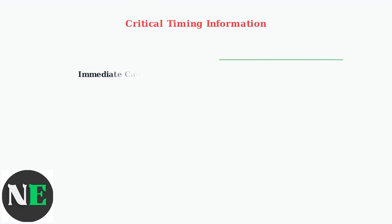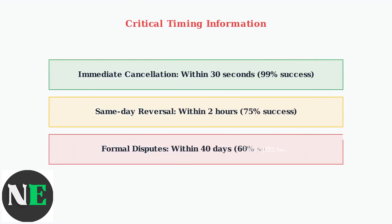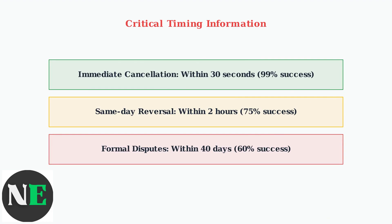Timing is crucial for successful payment reversals — the sooner you act, the higher your chances of success. Immediate cancellations have a 99% success rate, while formal disputes drop to 60%. Acting quickly is your best strategy. For pending payments, cancel immediately through the app. For completed payments, submit your dispute as soon as possible to maximize your chances of a successful reversal.